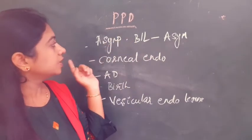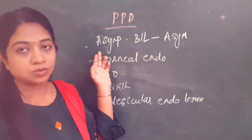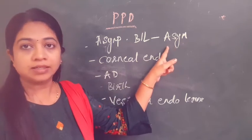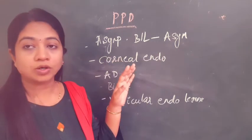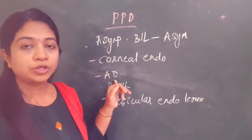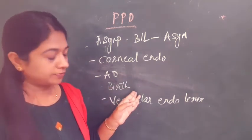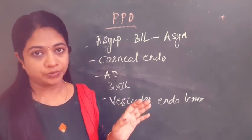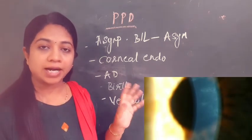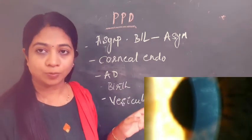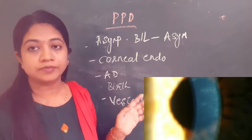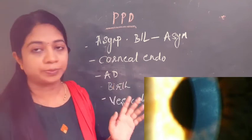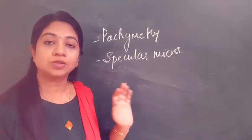Posterior polymorphous dystrophy (PPD) is a rare, usually asymptomatic, bilateral but asymmetrical disease. The corneal endothelium behaves like corneal epithelium, losing its function. It is autosomal dominant, present at birth or soon after, and shows vesicular endothelial lesions that join to form band-like lesions, leading to corneal opacity. PPD is more commonly associated with iris abnormalities, glaucoma, and Alport syndrome.